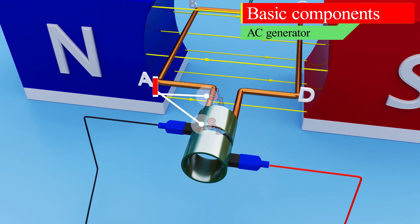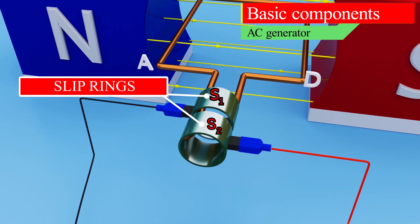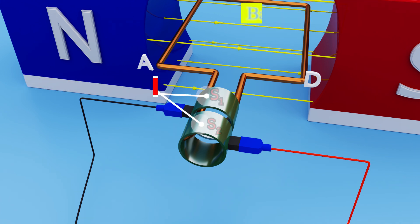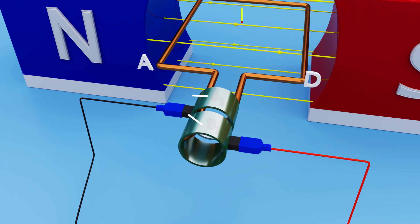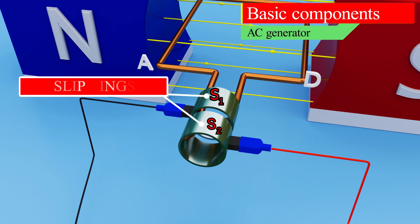Slip rings S1 and S2 are connected to the armature and rotate together with it. The slip ring consists of a circular conducting material that is connected to the armature rotor windings. Slip rings are used to bridge, transfer, and carry the power to and from the rotor of an AC generator.